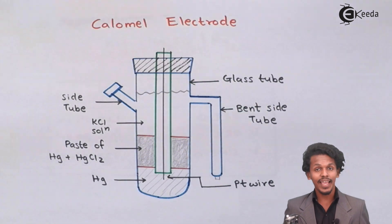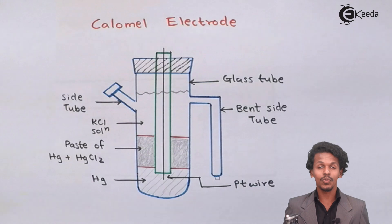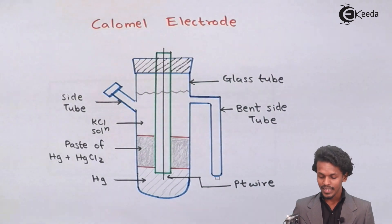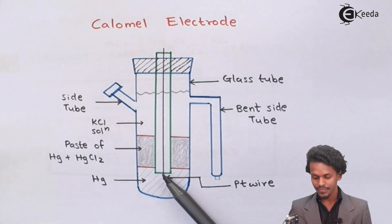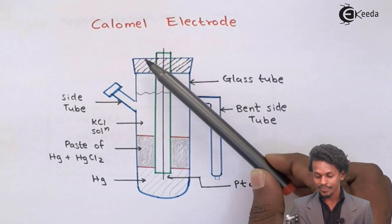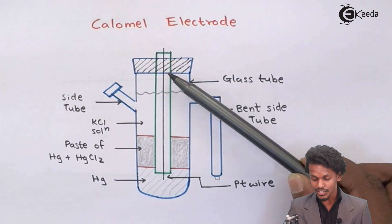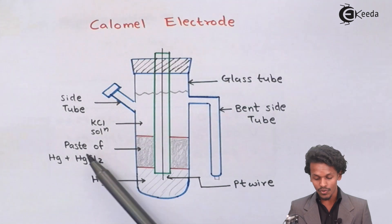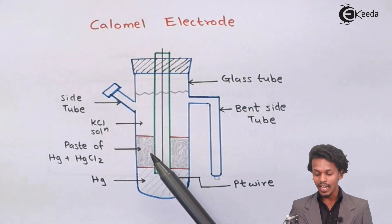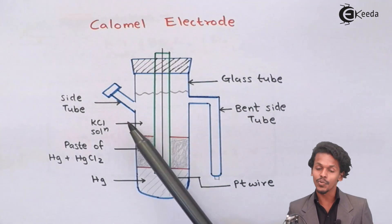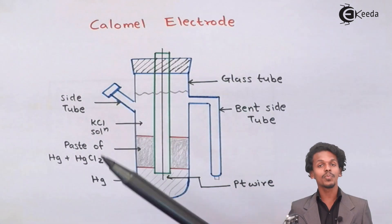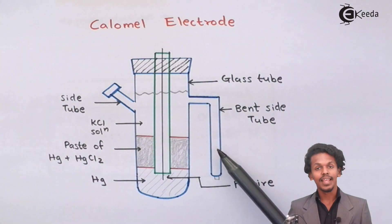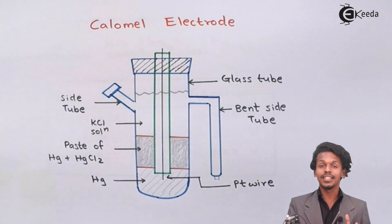As shown on your screen, there is a diagram of the calomel electrode. It consists of a platinum wire passed through a glass rod, and the overall glass rod has been dipped in a glass tube. That glass tube consists of three layers: mercury (Hg), a paste of mercury and HgCl₂, and a third layer of KCl solution. There is also a side tube for addition of KCl solution, and a bent tube that acts as a salt bridge connecting the two half cells.